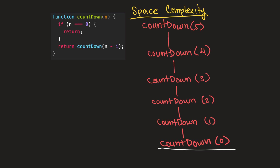This is how we come to an understanding of space complexity using this recursive function as an example. Because when we reach our base case, we have five calls taking up space on our call stack, and five also happens to be our value for n. So that means this function's space complexity is O(n). The most important thing to remember is that all of these recursive calls exist on the call stack simultaneously, and each one of them takes up memory. So if we pass in five as our n, we'll have five calls existing in memory simultaneously, which means our space complexity is O(n).